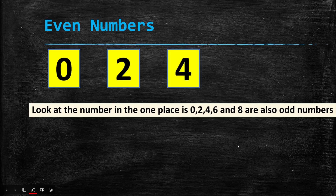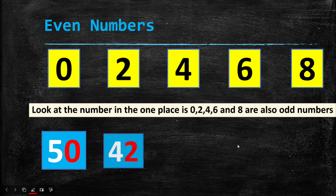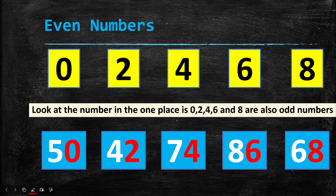Now let's look at the even numbers. Let's memorize them once again: 0, 2, 4, 6, and 8. Now for a sample: 50 — in the ones place it is written 0, and 0 is an even number, so 50 is an even number. All the samples shown here have even numbers in the ones place, so they are all even numbers.